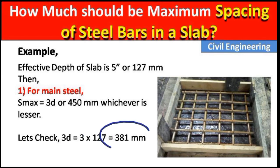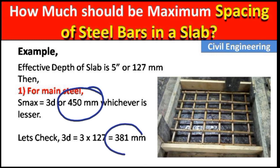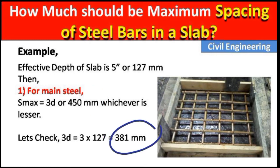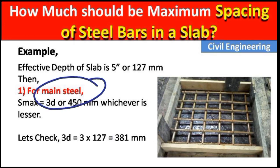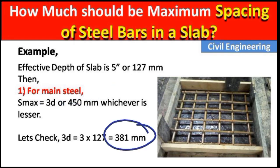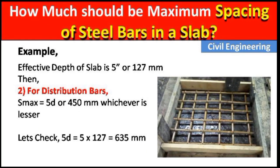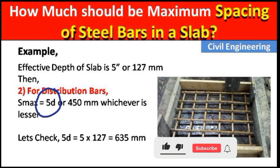After calculating, we get 381 mm. Now comparing 450 mm and 381 mm, the lesser value is 381 mm. So the maximum spacing between the main steel rods should be 381 mm. For distribution bars, the maximum distance is 5d and 450 mm, whichever is lesser.